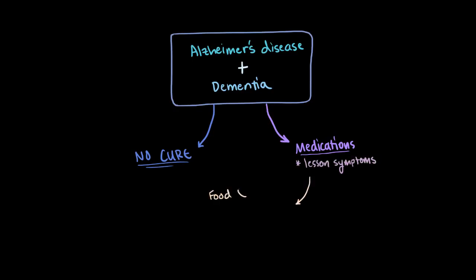Currently, all the medications approved by the Food and Drug Administration, or the FDA, are aimed at either one of two neurotransmitters: acetylcholine or glutamate.